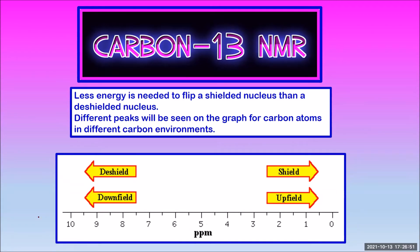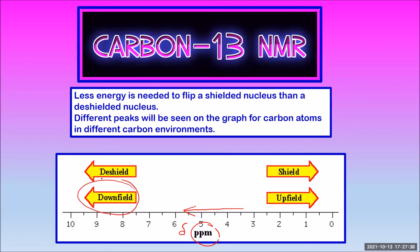The x-axis of the graph is chemical shift, or delta, measured in parts per million (ppm). This corresponds to the energy, or frequency, of the radio waves absorbed when the nucleus flips. Chemical shift increases as the energy needed to flip the nucleus increases. The scale goes backwards — from right to left — so further to the left means more energy was needed. This is called downfield because it's further from zero. A de-shielded nucleus bonded to a highly electronegative atom will make a peak downfield. A shielded nucleus, not bonded to any highly electronegative atoms, will make a peak upfield, or further to the right.